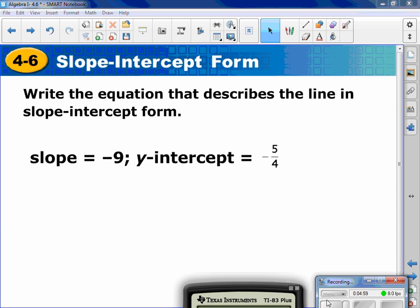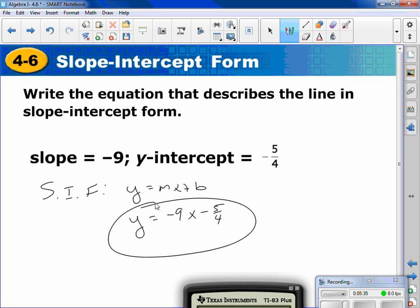So what we have here, we're going to write an equation that describes the line in slope-intercept form. We're not graphing, we're just writing what they give us into slope-intercept form. Slope's negative 9, the y-intercept's negative 5 fourths. Slope-intercept form, it's y equals mx plus b. So I have y equals, what's my slope? Negative 9x. What's my y-intercept? Negative 5 fourths. So I just take the sign, negative 5 fourths.